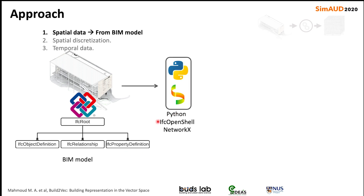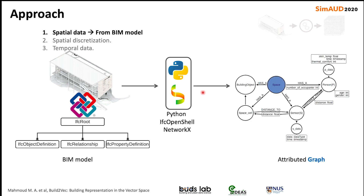Then we use Python and its libraries — IFC OpenShell and NetworkX — to convert the spatial data into attributed graphs. An attributed graph is a type of data structure that can handle rich data in each edge and each node, where each edge and each node can handle one or more attributes.